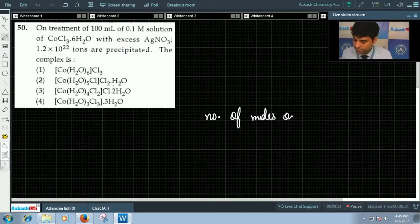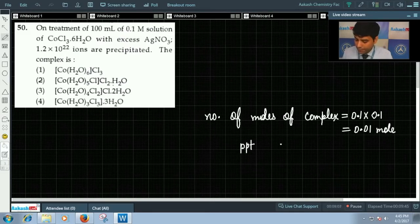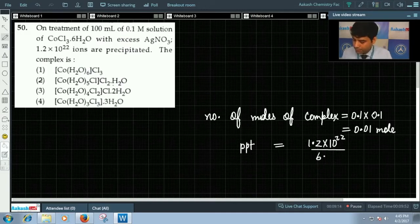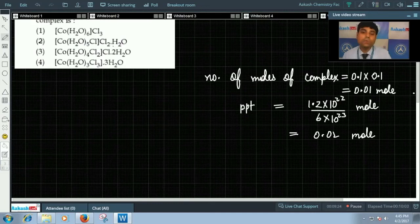As we can see, number of moles of complex is equals to volume in liters multiply by molarity, that is 0.01 mole. And precipitated ions equals 1.2×10²² divided by 6×10²³, these many moles, that is 0.02 mole approximately.